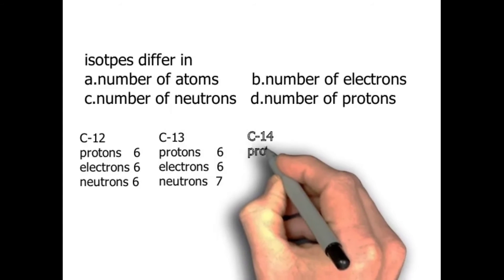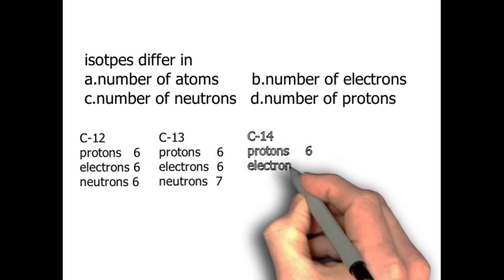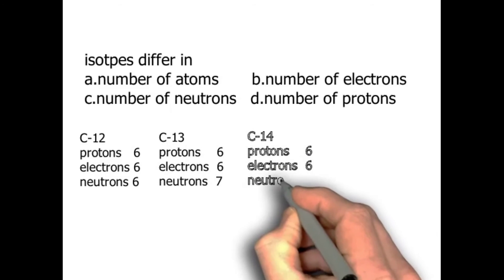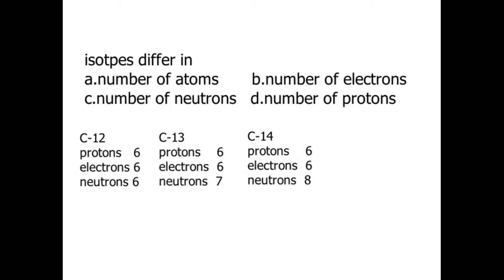Carbon-14 has 6 protons, 6 electrons, and 8 neutrons. So this is clear.